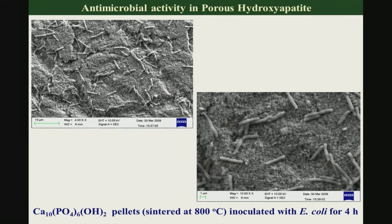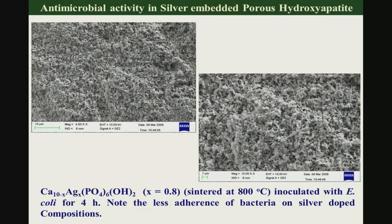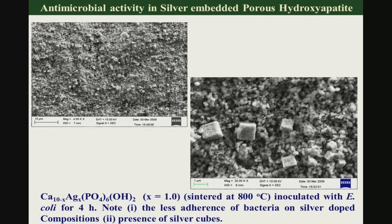Coming to the antimicrobial property of these materials: the sintered pellets are inoculated with E. coli for 4 hours. At x equal to 1.5, much fewer E. coli are found adhering on the material compared to the hydroxyapatite control. At x equal to 0.8, it is very hard to find even a single E. coli in the entire investigative SEM region after 4 hours of culture. At x equal to 1.0, there is no evidence of E. coli bacteria on this material substrate, essentially confirming that from x equal to 1.0 onwards these materials have clear bactericidal property in vitro.